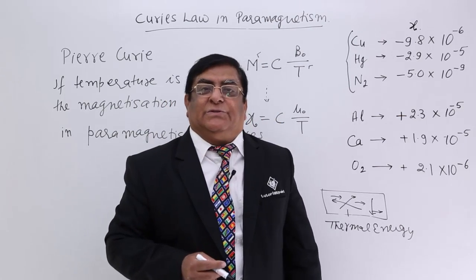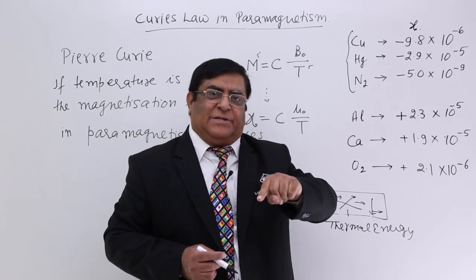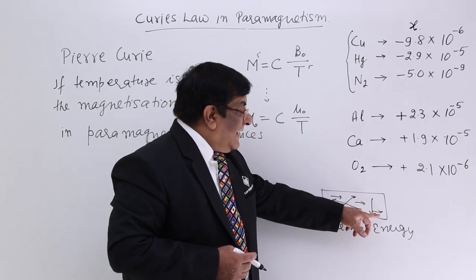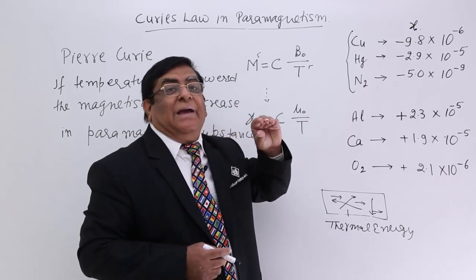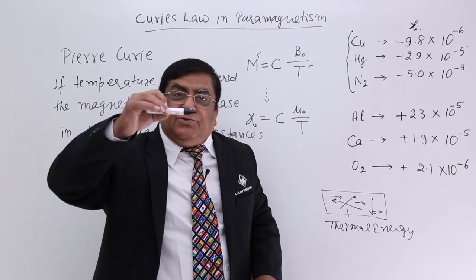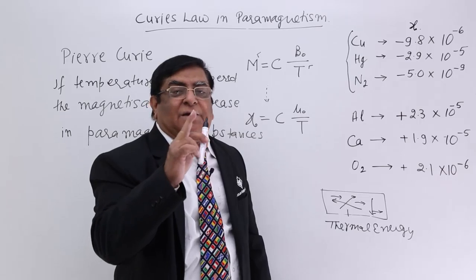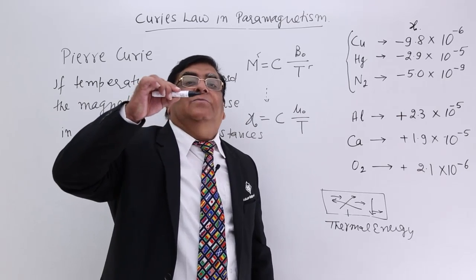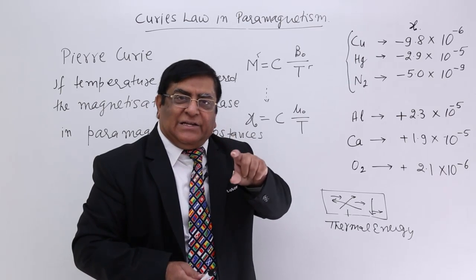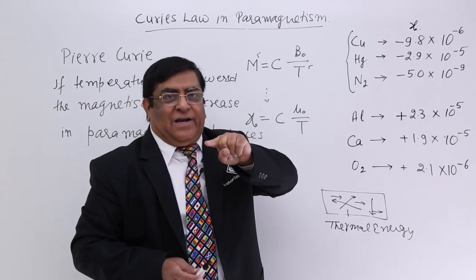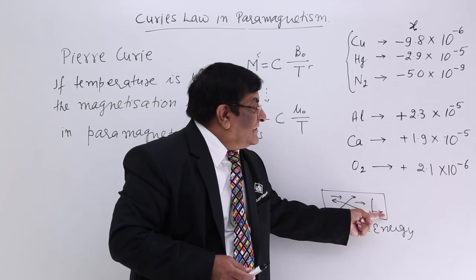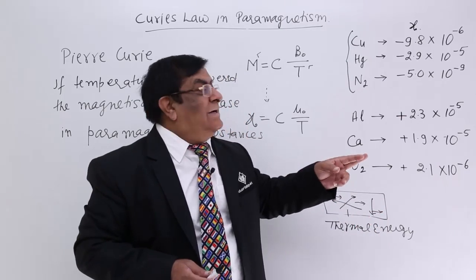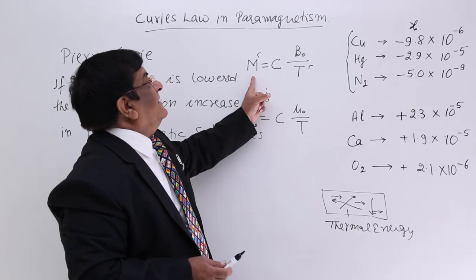Now suppose we lower the temperature. If you lower the temperature, the energy becomes less. The magnetization is always trying to align all the dipoles, but due to temperature they were turning and moving. Now if the temperature is decreased, the energy of disturbance decreases and they will align more. So less temperature means less random motion; if there is less random motion, then there is more alignment in the direction of the magnetic dipole. So the magnetic dipole effect increases, and the paramagnetic effect — that is, magnetization — increases.